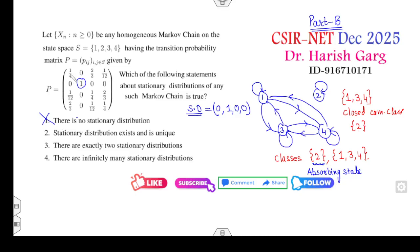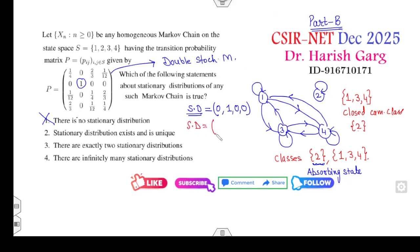Now if you look at the submatrix for states {1, 3, 4}, each row sum is 1 and each column sum is also 1. That means this matrix is a doubly stochastic matrix. For a doubly stochastic matrix, the stationary distribution is uniform: 1/3, 1/3, 1/3 for the three states, and 0 for state 2.